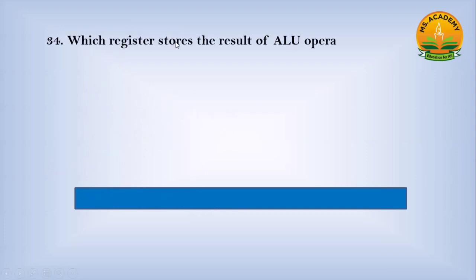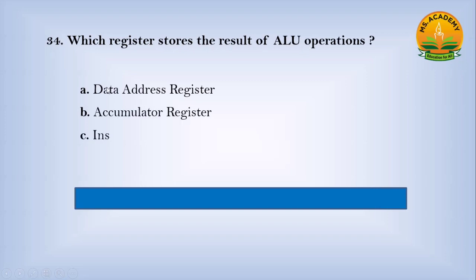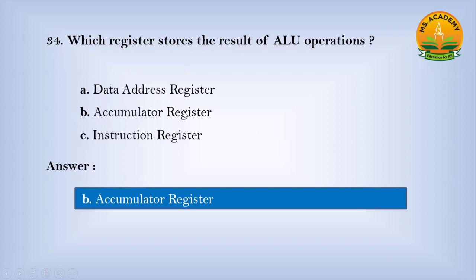Which register stores the result of ALU operations? Option A Data Address Register, option B Accumulator Register, option C Instruction Register. Answer: B. Number Accumulator Register.